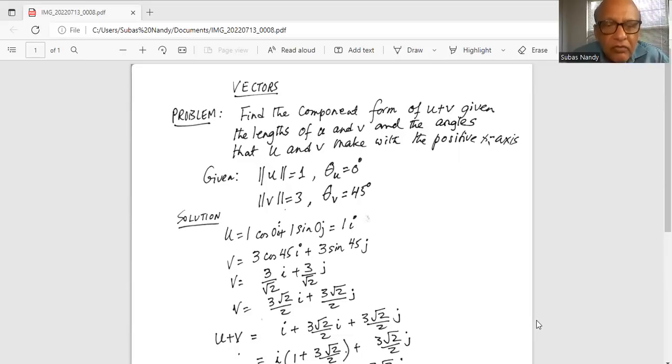And v is 3 cosine 45i plus 3 sine 45j. Now we know cosine of 45 and sine of 45 are equal and both equal to 1 over square root of 2 or square root of 2 divided by 2. So vector v is 3 square root of 2 divided by 2i plus 3 square root of 2 divided by 2j.